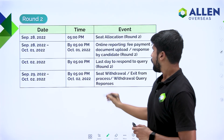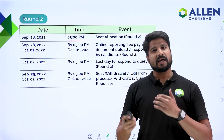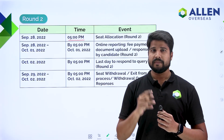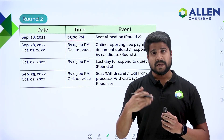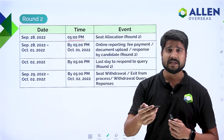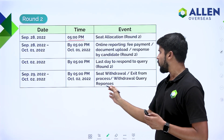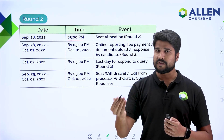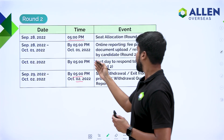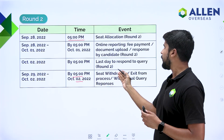Round 2 will open on 28th September at 5 pm. If you get a seat allotment in Round 1, after paying the seat acceptance fee, you will be asked to provide your willingness: freeze, float, or slide. From 28th September to 1st October, the online reporting process can be done. By 5 pm on 2nd October, you can withdraw your seat, exit from the process, or respond to queries — this is the last day for query response in Round 2.